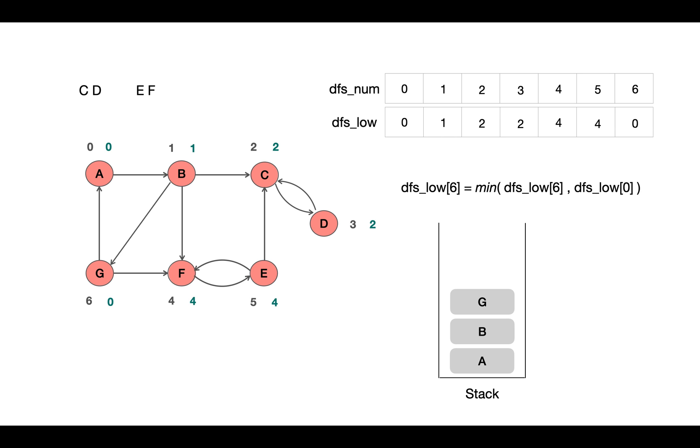We come back to B and update its min low value from current low value and from the DFS_num value of the node which we came from. So we update 0 here, and DFS_low and num are not equal, so we come back to A and repeat the same for A.